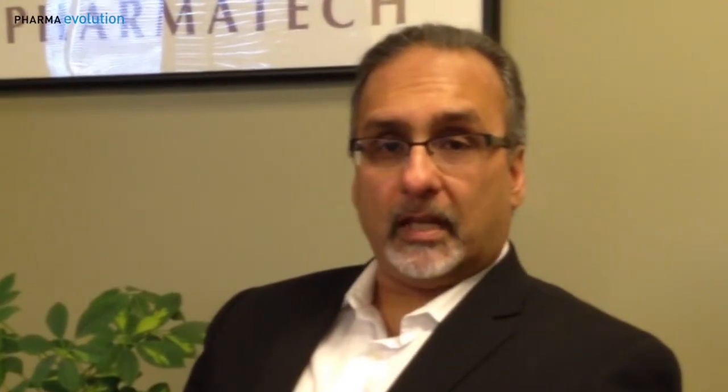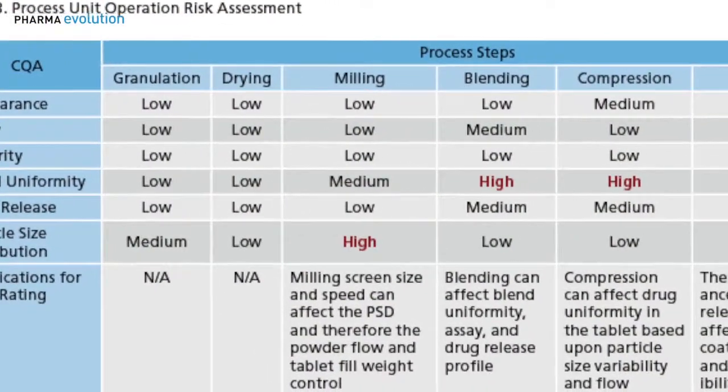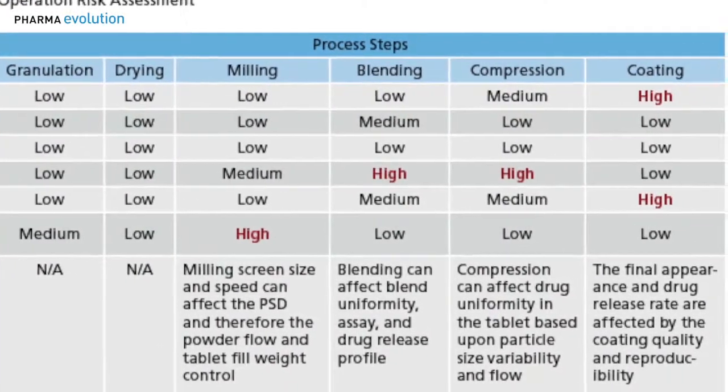If we find parameters that are important to the process stability, that's important to know, because at the end of the day we'll have to put forth a control strategy that will make sense. But what we're really looking for are process parameters which have an impact on the product's performance. If we find parameters that do, these parameters are potentially considered critical process parameters. Now there is no unified definition of critical process parameters that the FDA has put out — simply that these are parameters that are important to the product's performance.